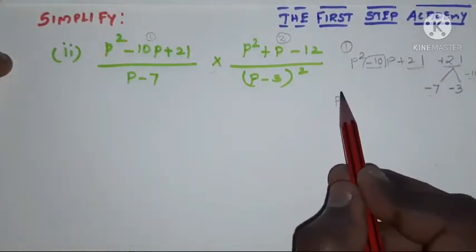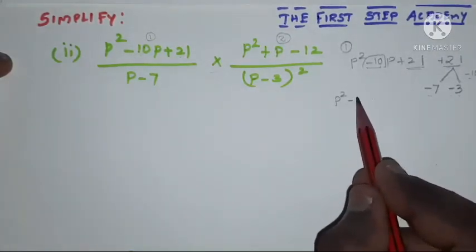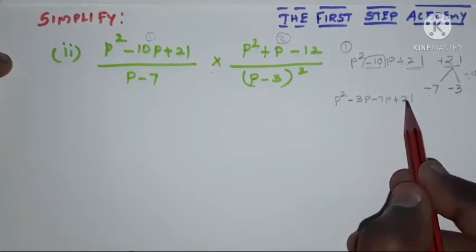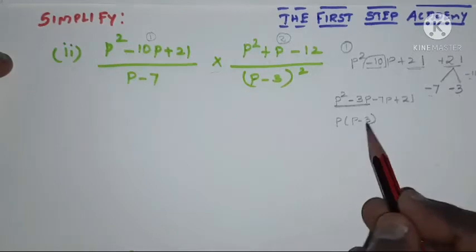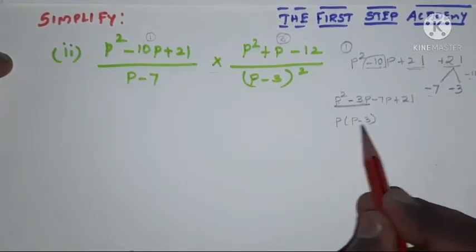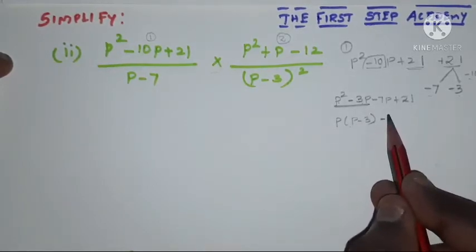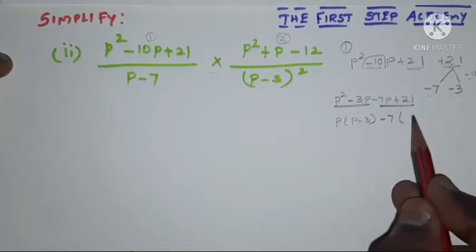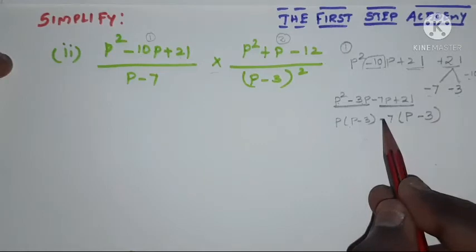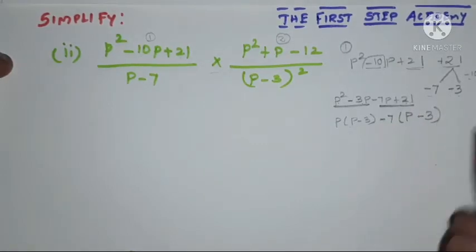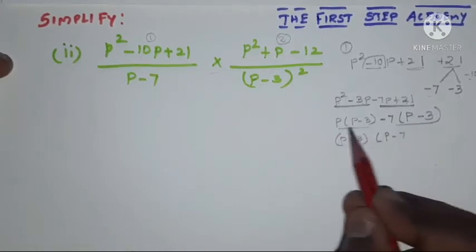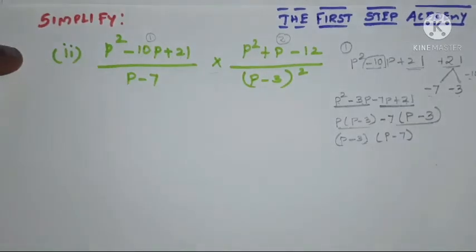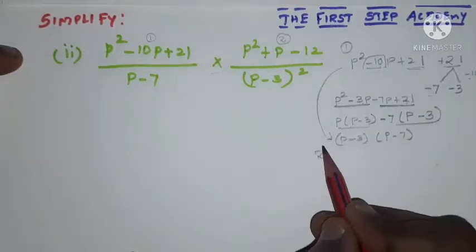So I'm going to factorize: p squared minus 10p plus 21. The minus 10p can be split as minus 3p and minus 7p, plus 21. In the first two terms, p is common, so taking p outside gives p(p minus 3). In the last two terms, minus 7 is common, giving minus 7(p minus 3). Now p minus 3 is common, so the factors are (p minus 3)(p minus 7).